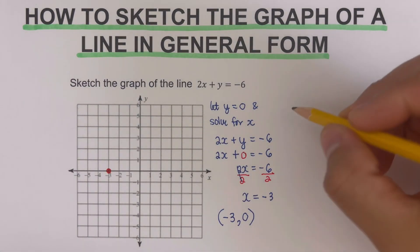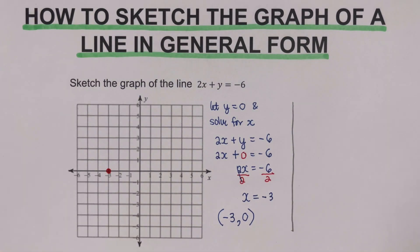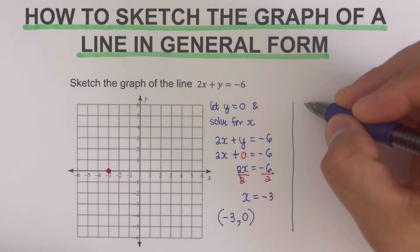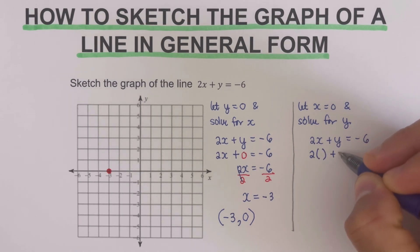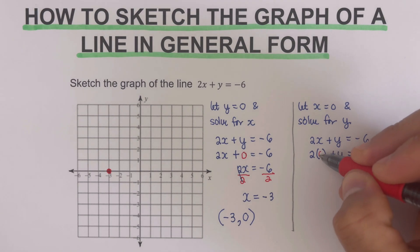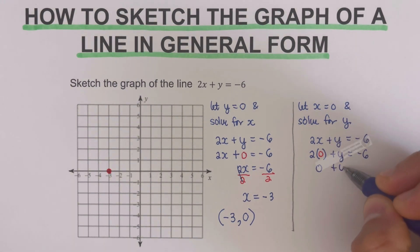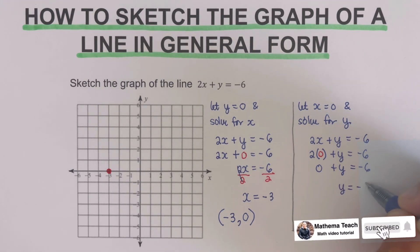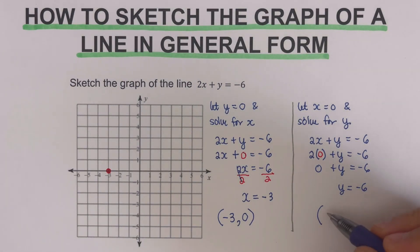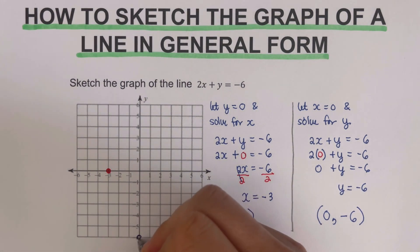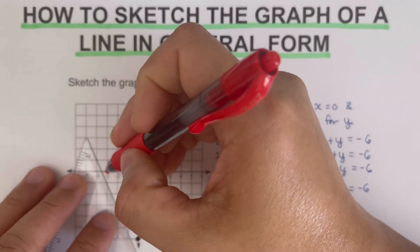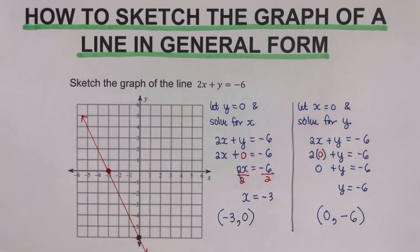Now we determine the y-intercept by letting x equals zero and solving for y. Plugging zero in for x: two times zero is zero, so 0 plus y equals negative six, giving us y equals negative six. The y-intercept coordinate is zero, negative six — plotted all the way down here. Now we're ready to sketch the graph, and this is the graph of our equation.